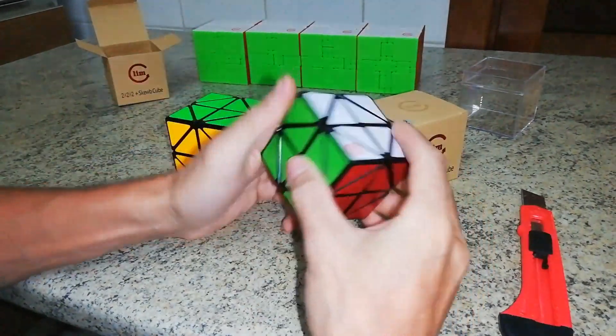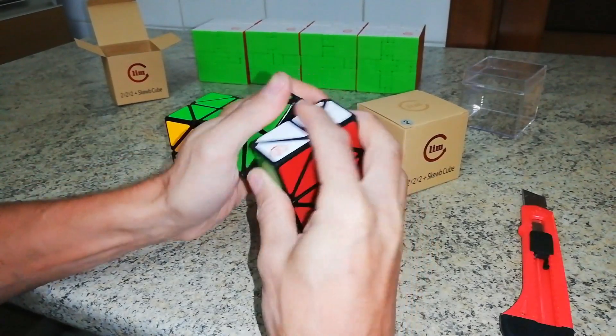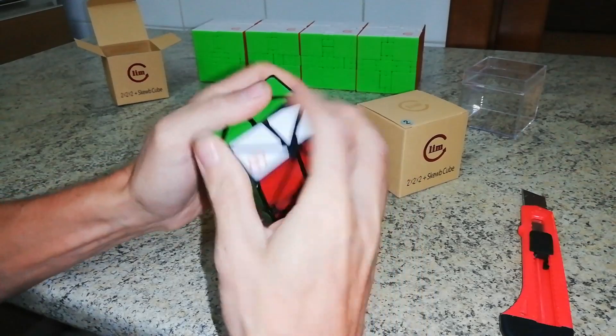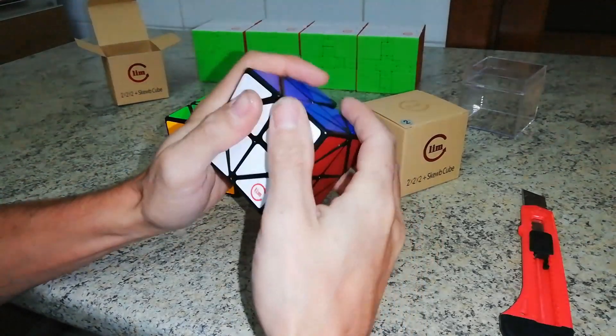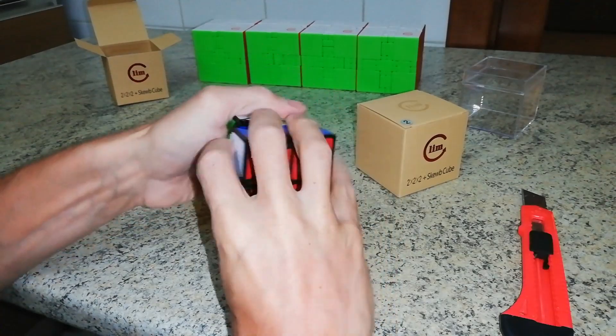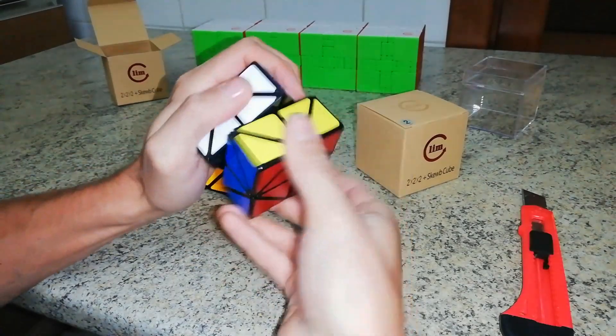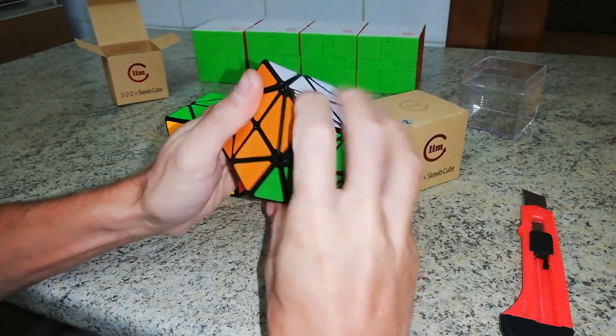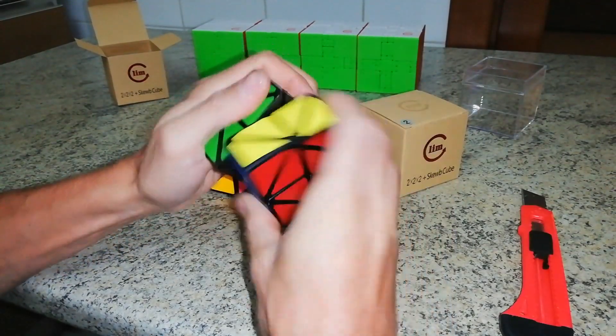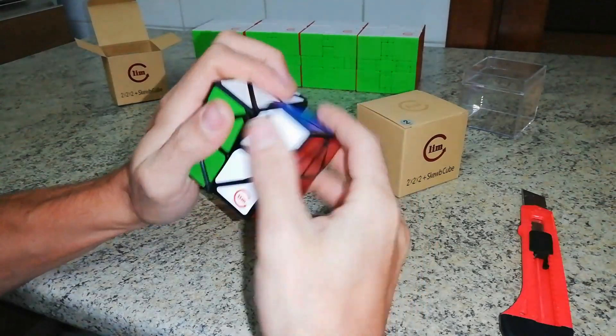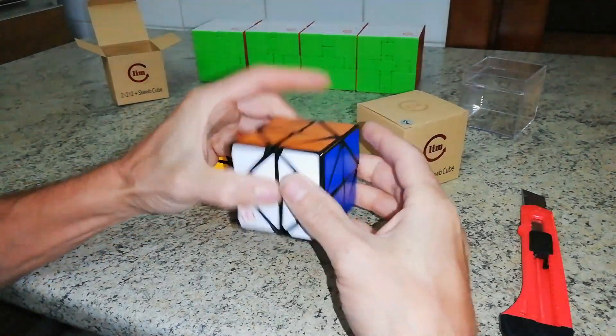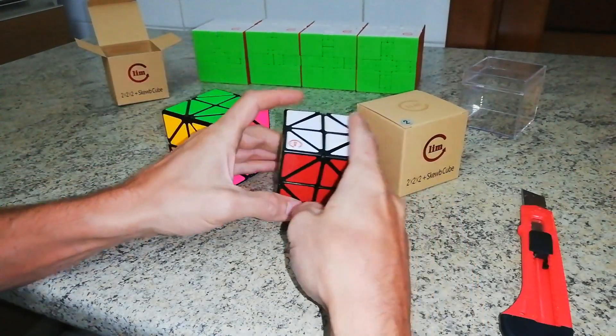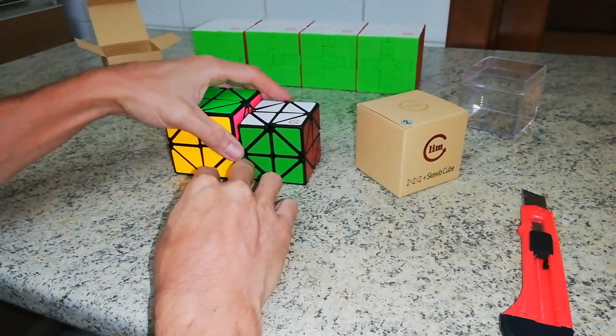While here we have a skew plus 2x2x2. With a counterclockwise rotation it turns better. With a clockwise sometimes it can stop the rotation. But this is a wonderful puzzle to have in collection. As you can see it's really really small.